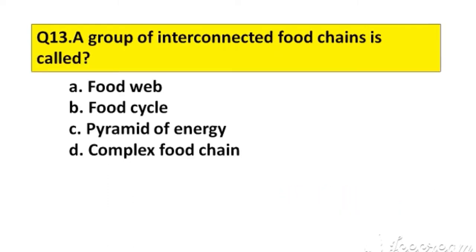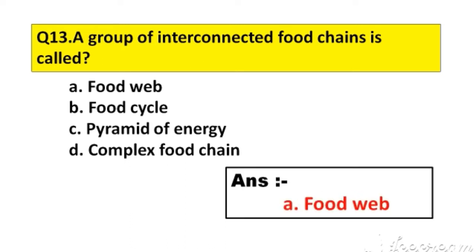Question number 13. A group of interconnected food chains is called. Option A: Food web. B: Food cycle. C: Pyramid of energy. D: Complex food chain. The right answer is option A, Food web.